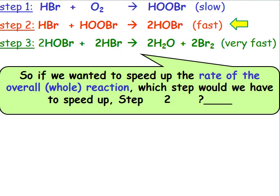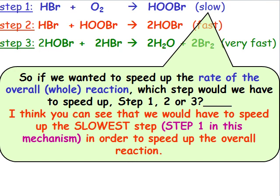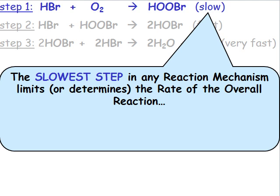Step 1, step 2, or step 3? I think you can see that we would have to speed up the slowest step in order to speed up the overall reaction. In this mechanism, step 1 is the slowest step. The slowest step in any reaction mechanism limits or determines the rate of the overall reaction.